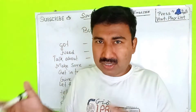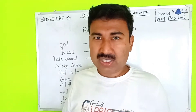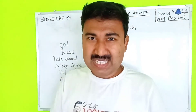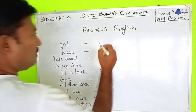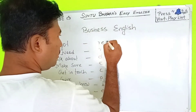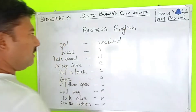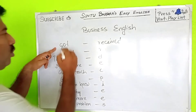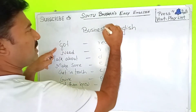In normal English you say: 'I have got an order.' When you say business English, you have to change this language. You have to say: 'I have received an order.' So, 'got' is equal to 'received' — but 'received' is business English. So you say: 'I have received an order.'